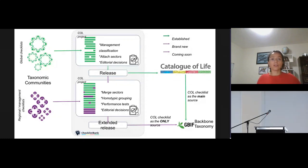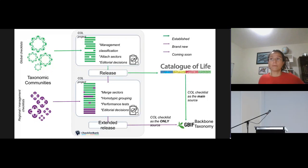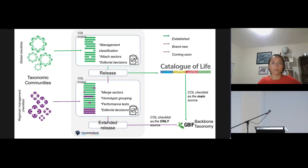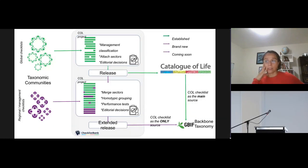Here is a general diagram of the workflow for the extended release. In the first part — shown in green — we have the process that Olaf described in the previous presentation, where the current workflow creates the CoL checklist that is available on its website and considers only global checklists. But once we have this release, we start to get information from regional, more local or national and management checklists that have not been included before in the CoL checklist.